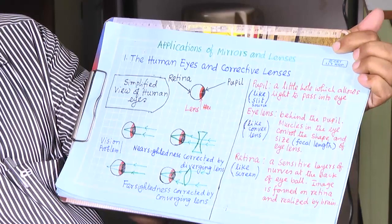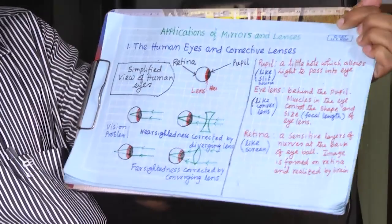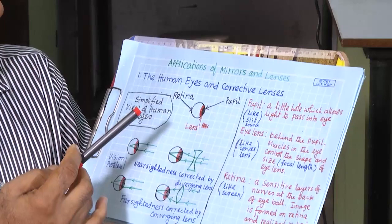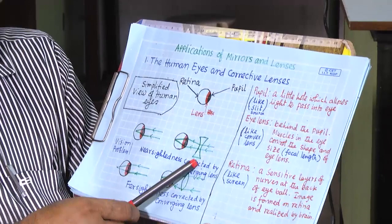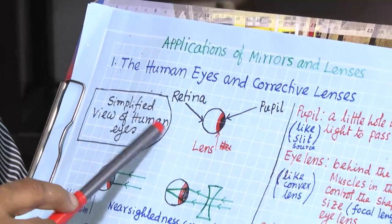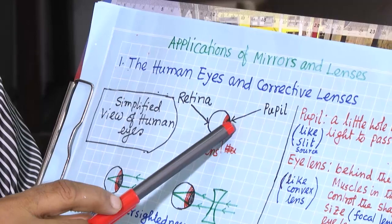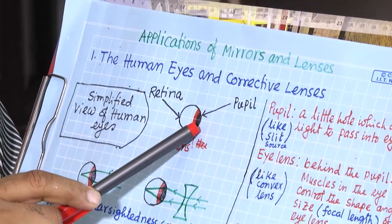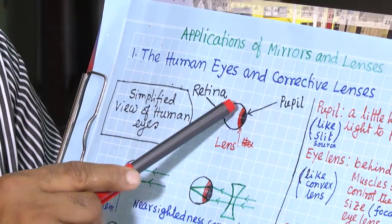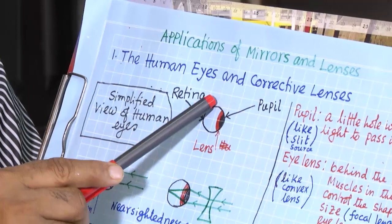The first very useful application is for spectacles. So we have the human eye and corrective lenses. This is the simplified view of the human eye. In the human eye, this black part we see is called the pupil, and behind this pupil there is a lens, and the back side of this lens is called the retina.